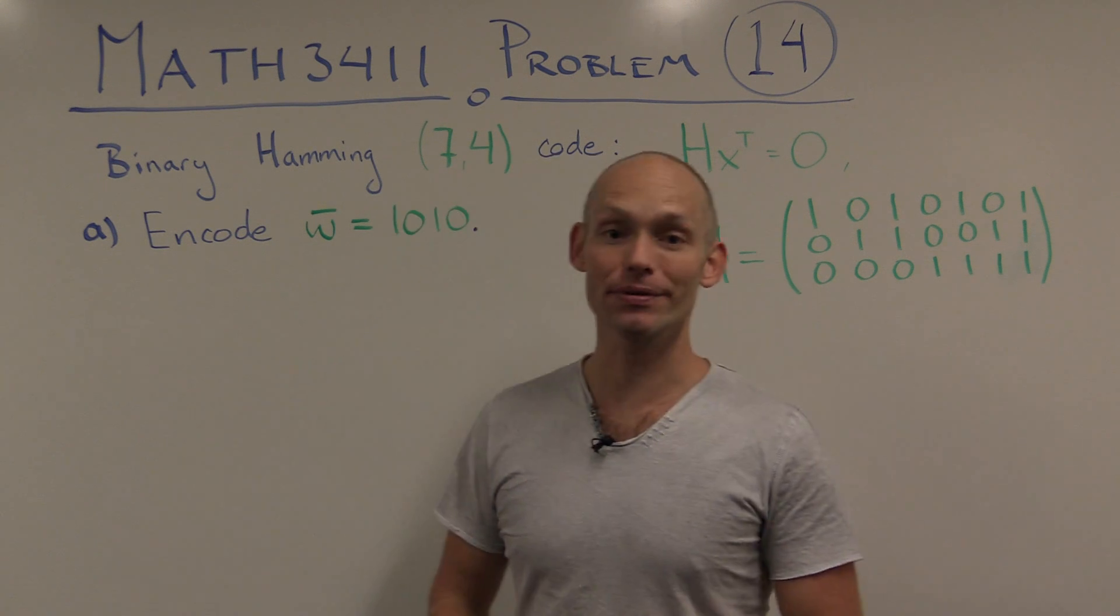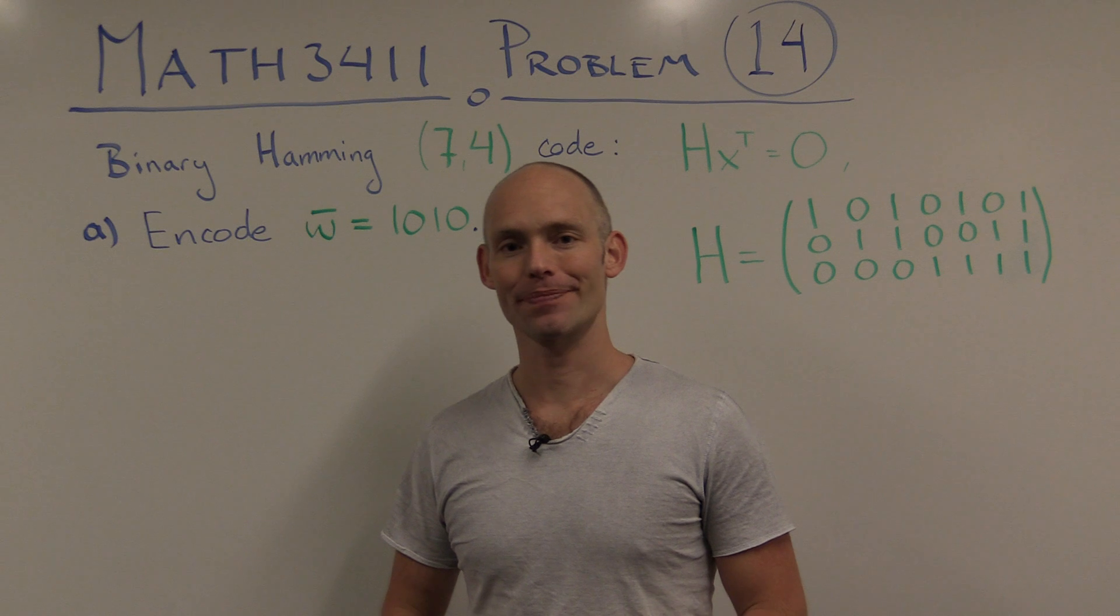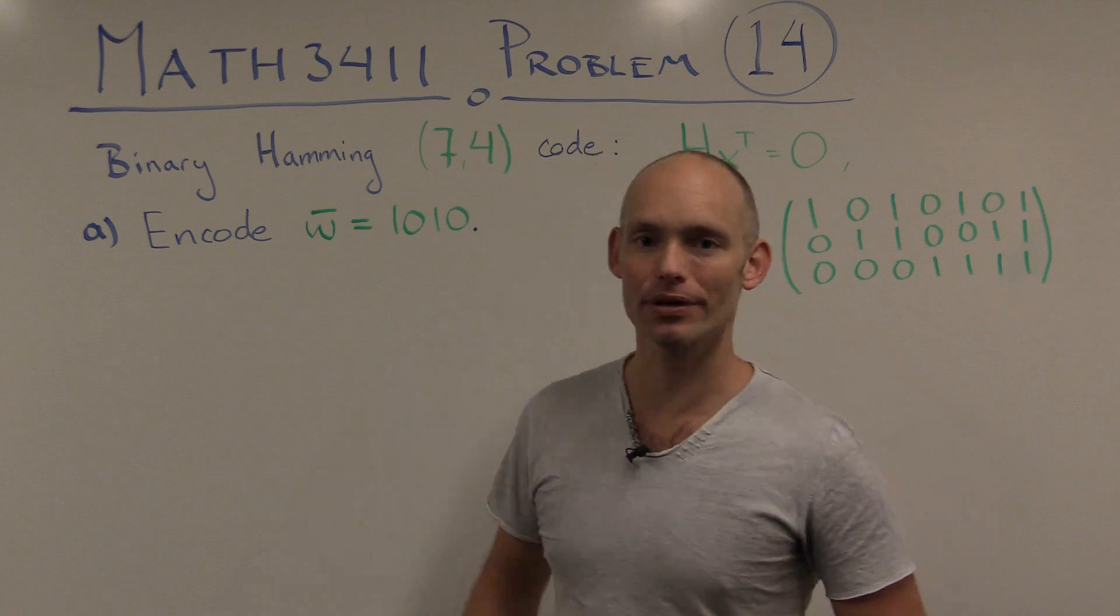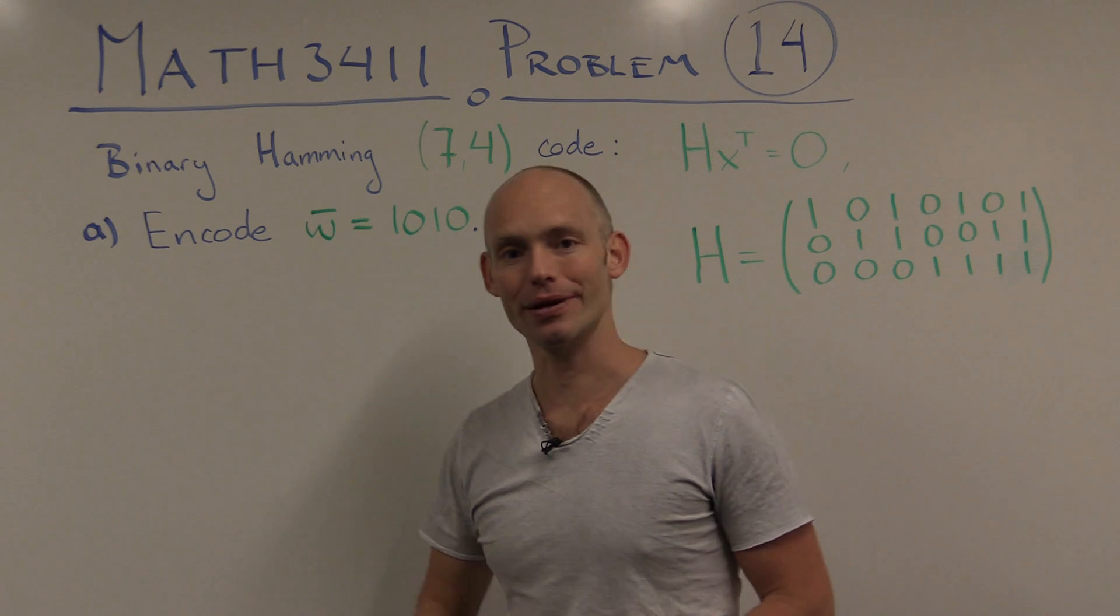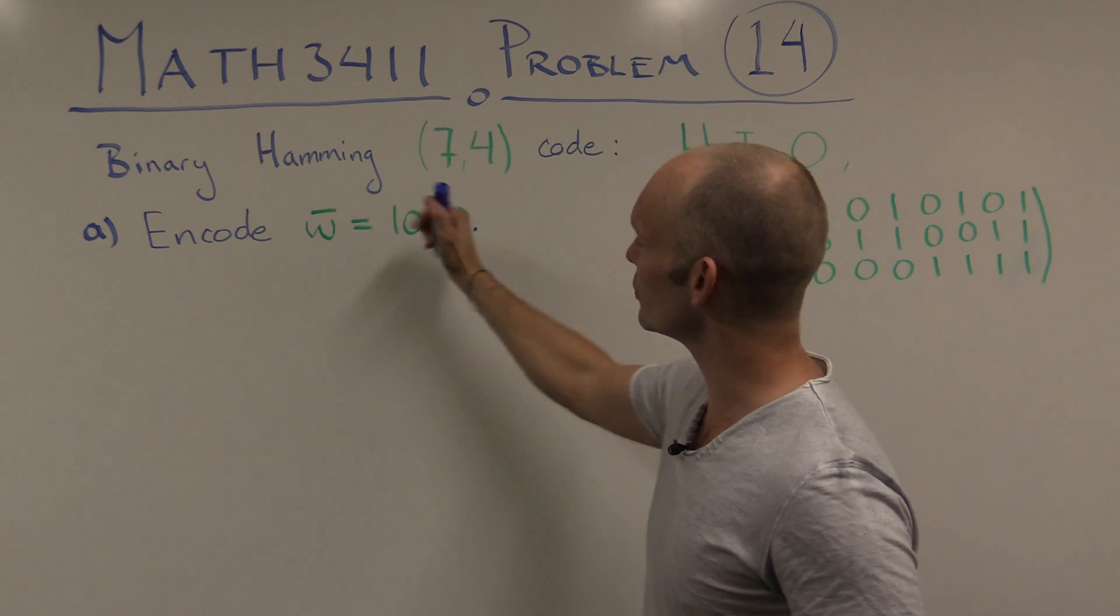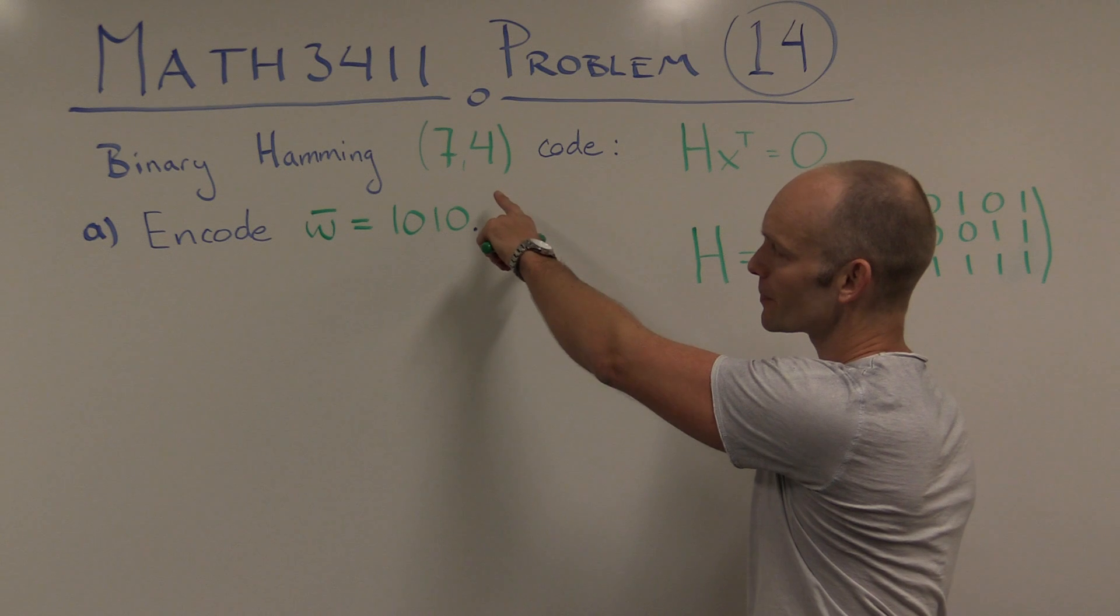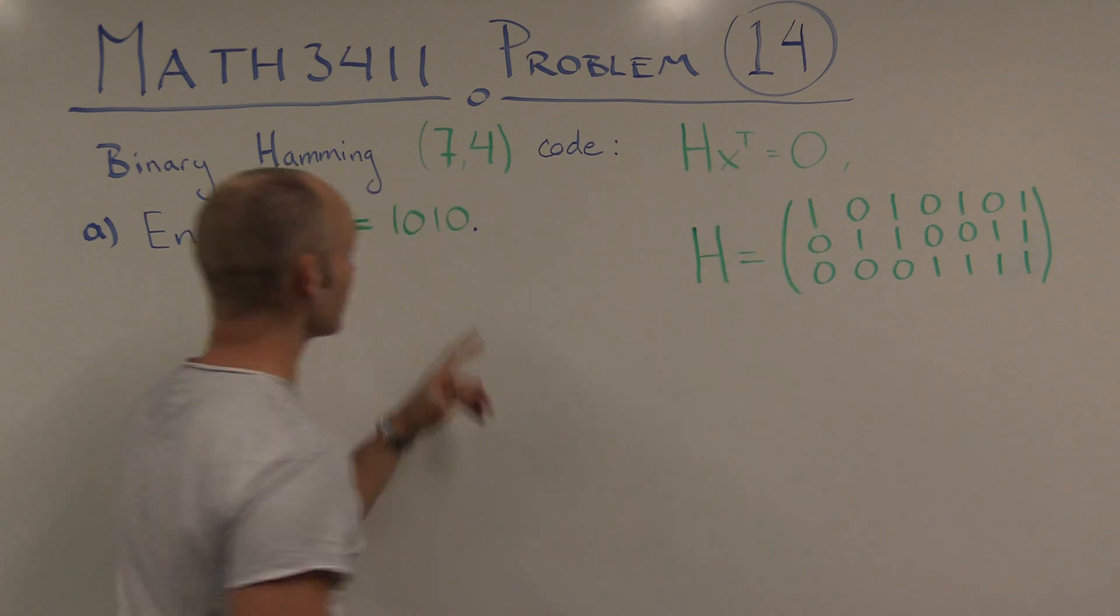Hi, and welcome to UNSW, the School of Mathematics and Statistics. My name is Thomas Britz, and I'll be going through this problem here, problem number 14 in Math 3411, which is about the binary Hemming code, in particular, this 7-4 code.